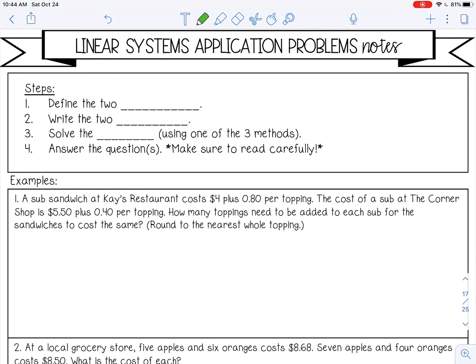First you want to define the two variables, so your x and your y. Then you want to write the two equations for your system. Remember, these are systems so they're going to have two or more, all of these just have two, and then you will solve the system using one of the three methods we have learned, which are graphing, substitution, or elimination. And then you answer the questions, and there may be more than one, and you need to make sure that you read carefully.